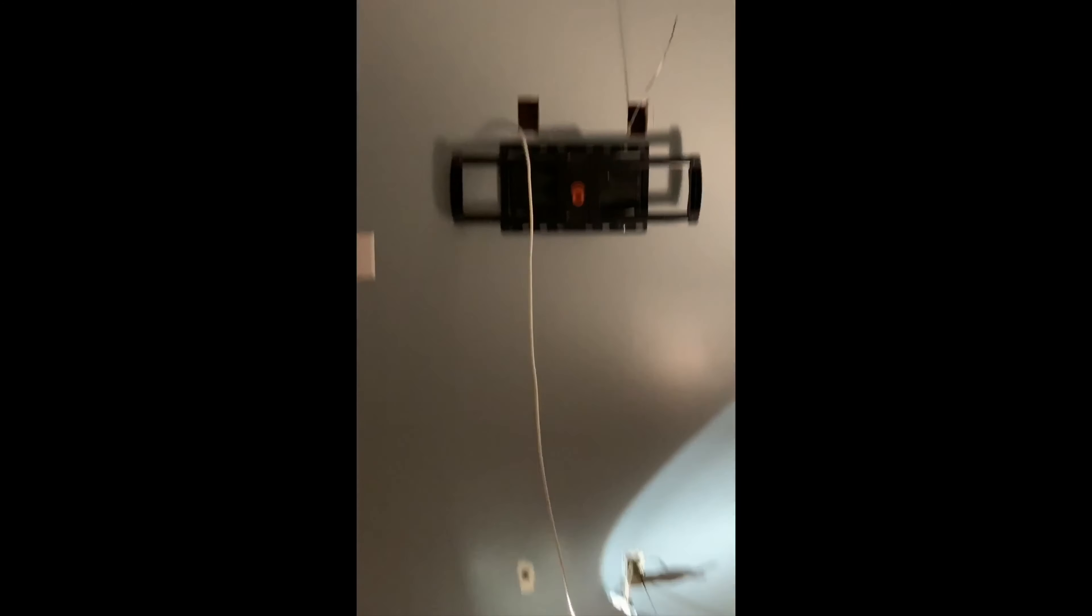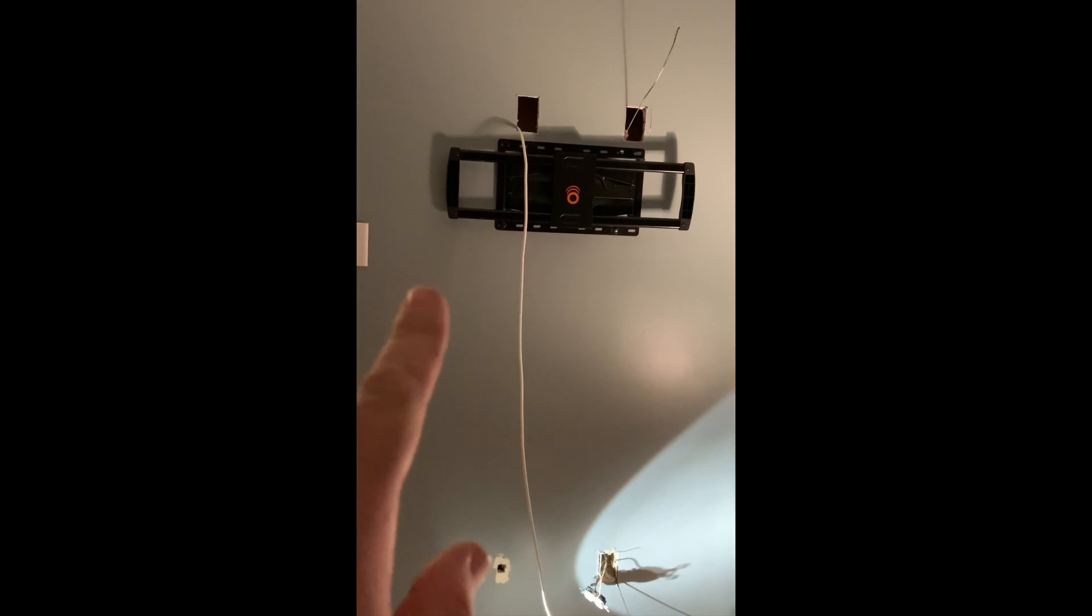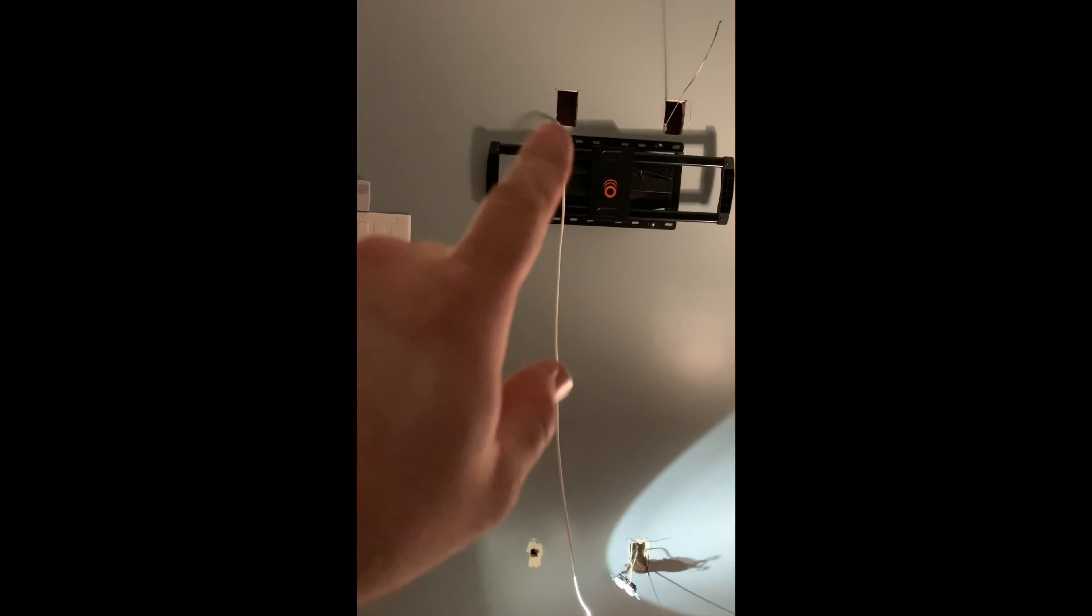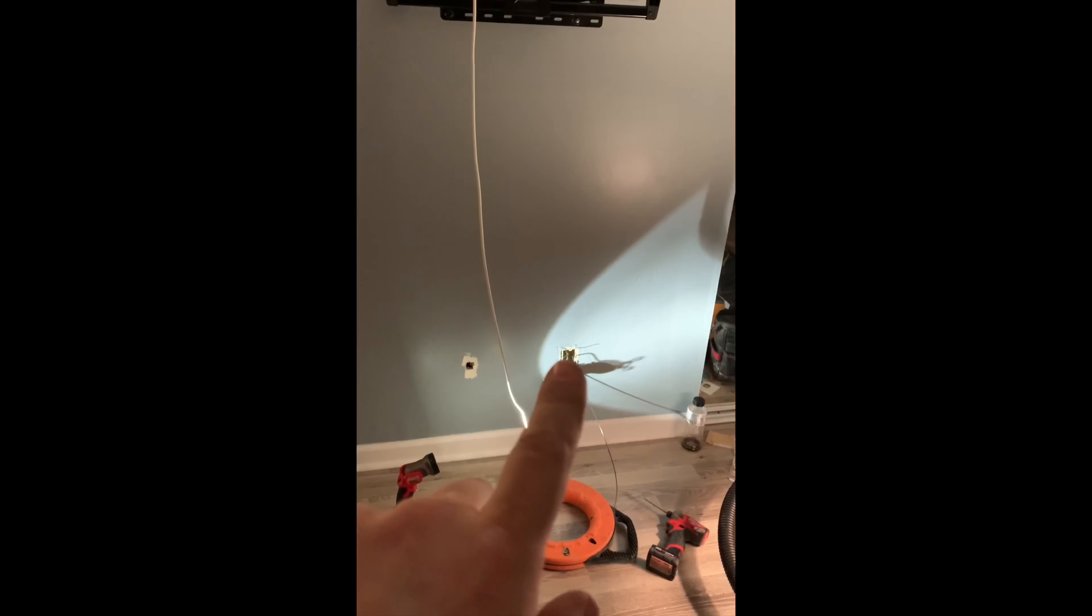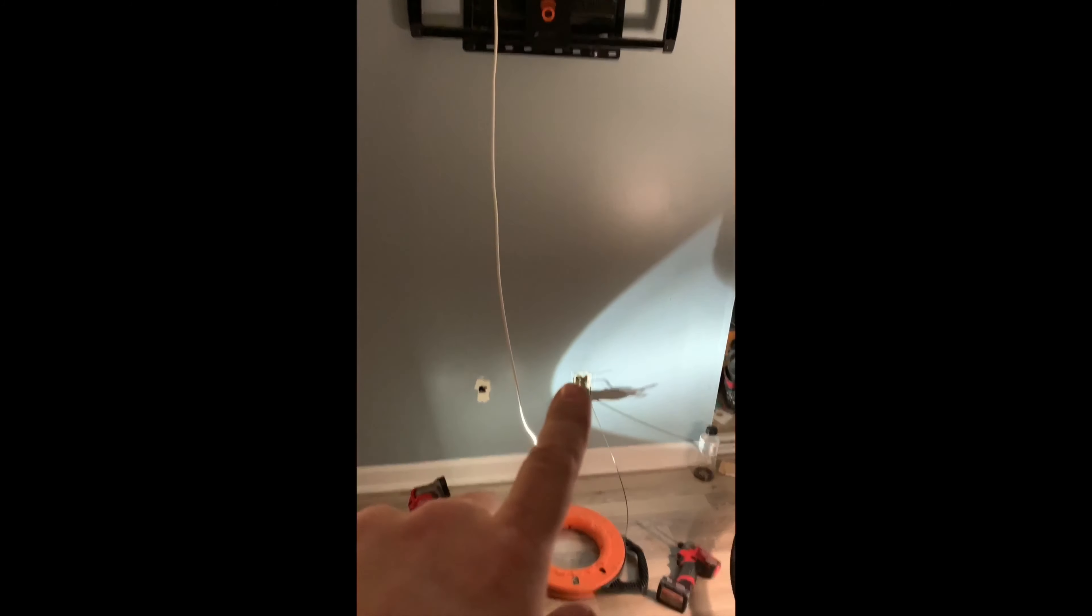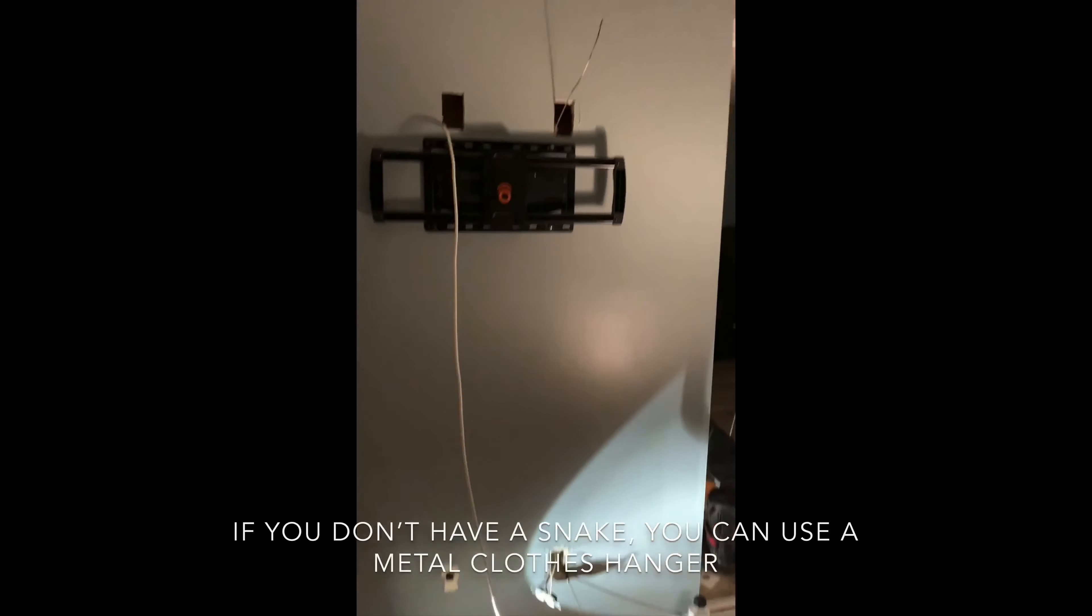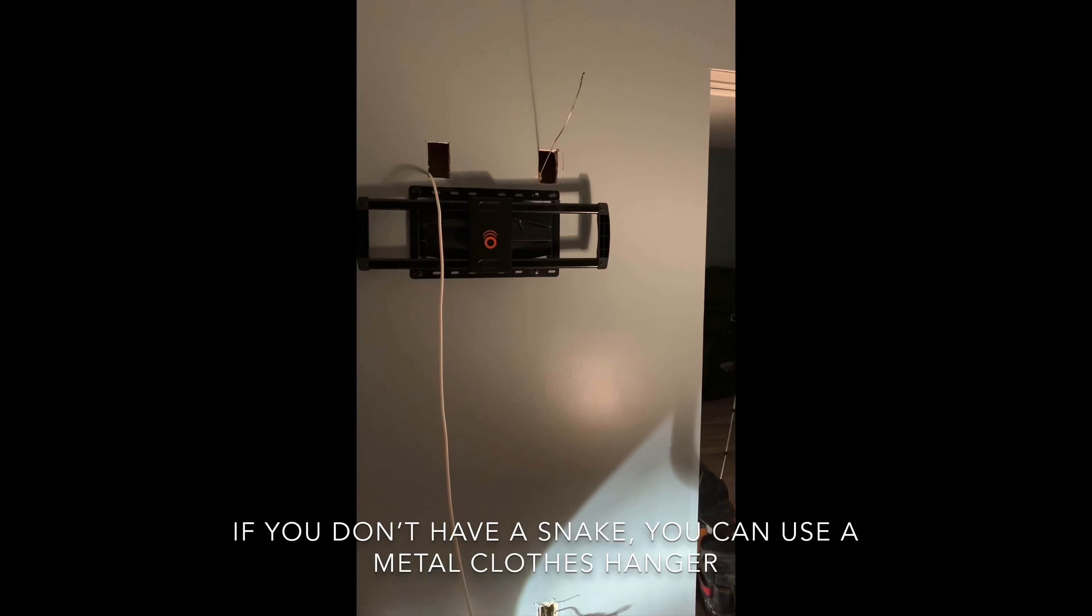We have an outlet here and cable here. TV is mounted there, so what we're doing is we're moving the cable from there to up there. We're leaving that outlet there, but we're adding an outlet up there. As you can see, I have my snake through the wall. I'm gonna connect the wire to this side and pull it down into this box.